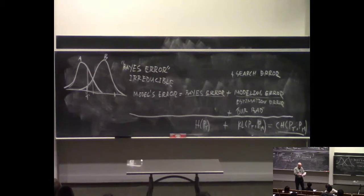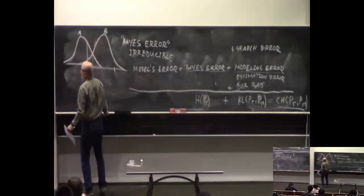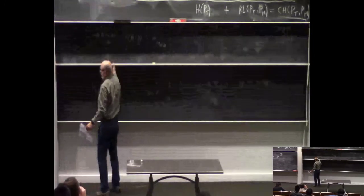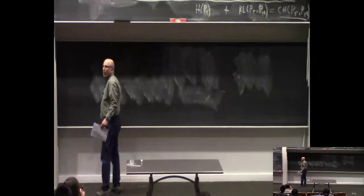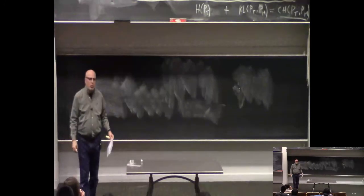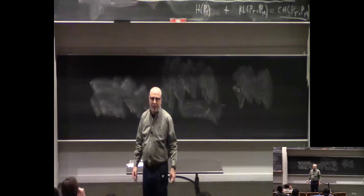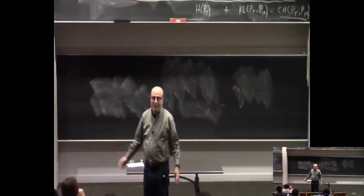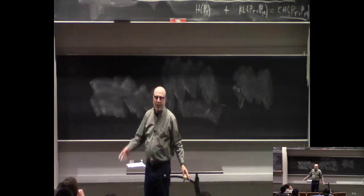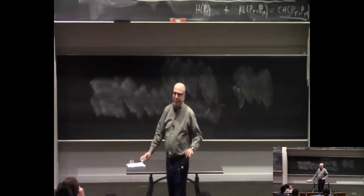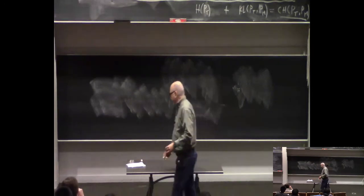Let me move to another topic: reinforcement learning. There were two or three topics that used to be hard and then kind of died. Reinforcement learning didn't die, but it took a long nap from the 90s until about five years ago, and then it woke up again. That means we shouldn't discount things that look hopeless — one day they may not be. Other such topics are genetic search and genetic learning, which are still kind of half asleep.